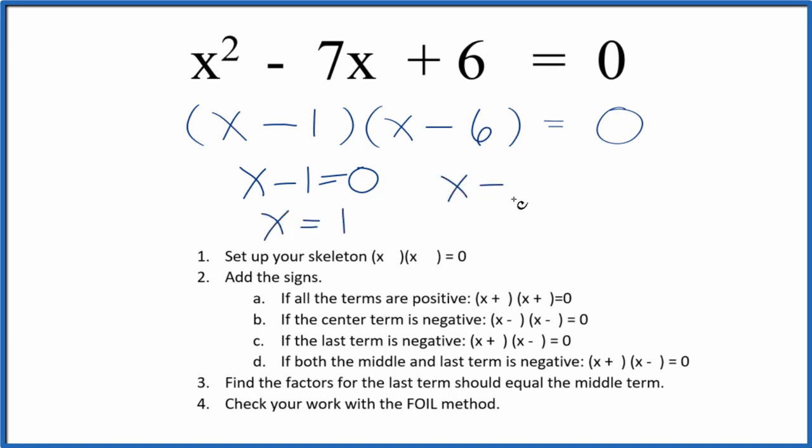If you put 1 in for x, 1 - 7 + 6 gives us 0.